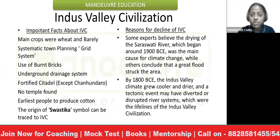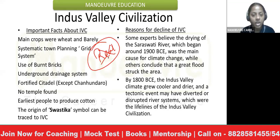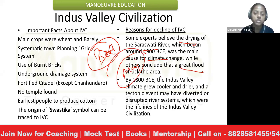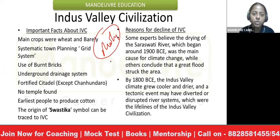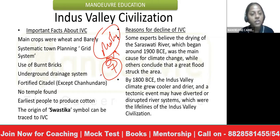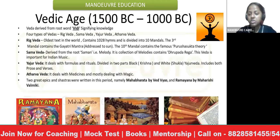The reasons for the decline of IVC are not definitively known, but the possible reasons include the drying up of the Saraswati River or climate change. However, the most widely accepted reason is that a great flood struck the area. Mohenjo-daro is said to have been flooded almost six to seven times; they survived each time, but finally a massive flood ended the civilization.